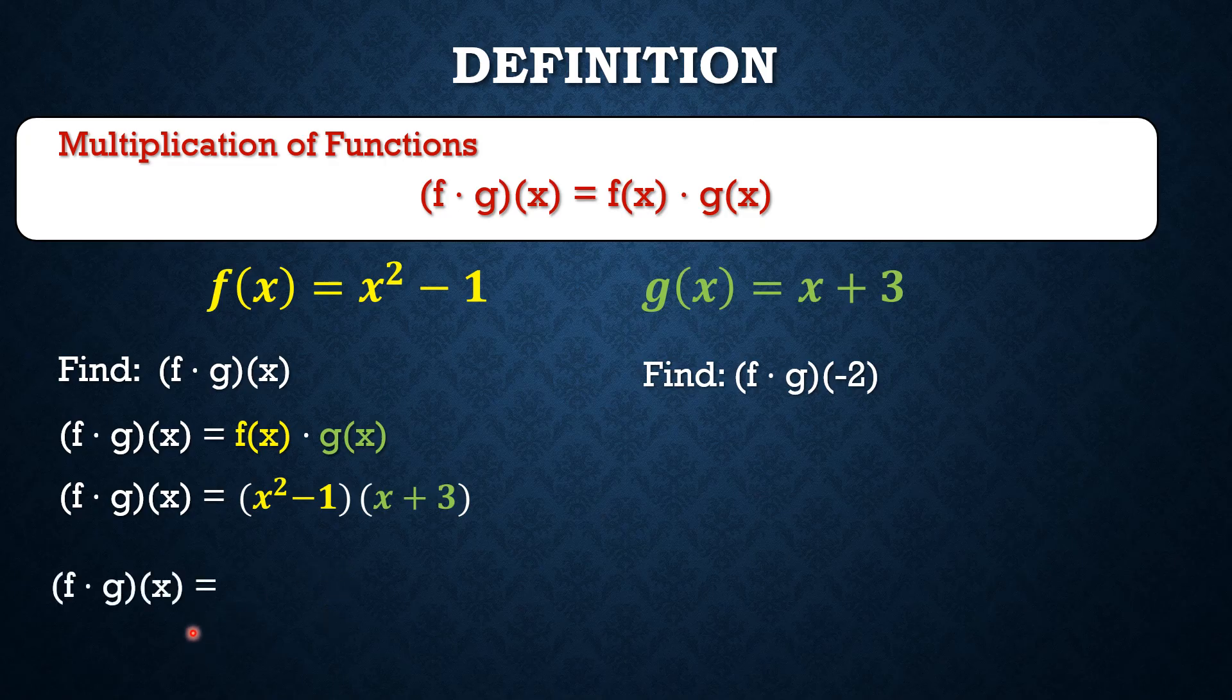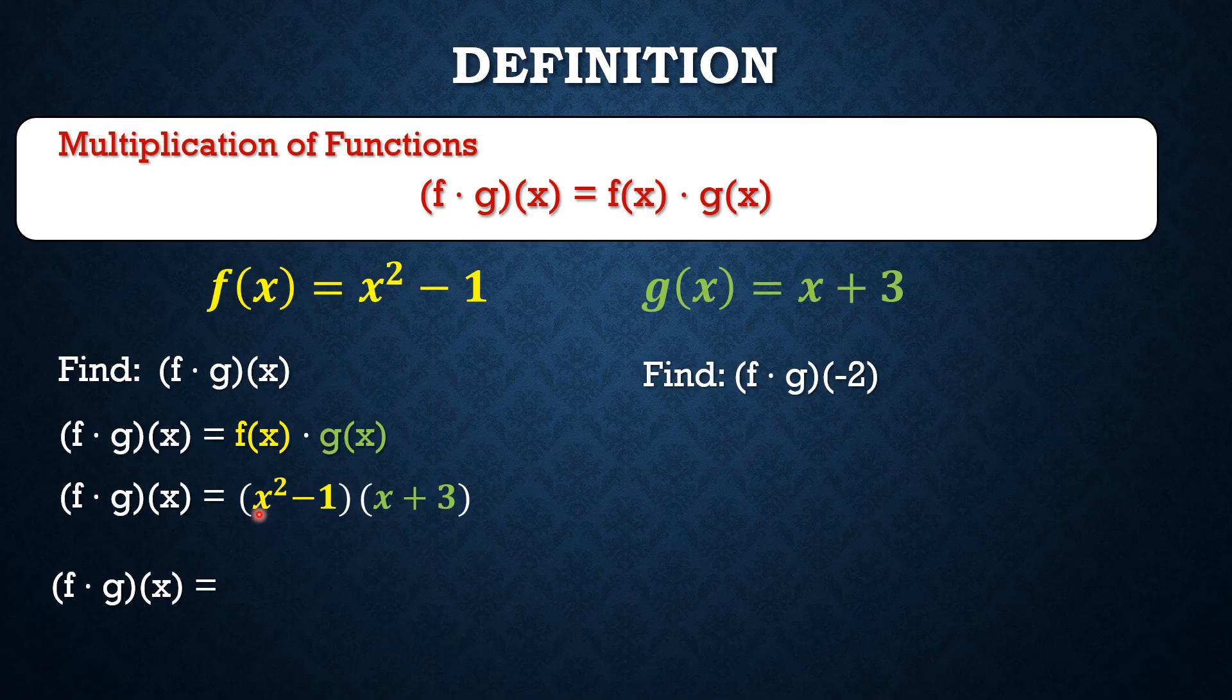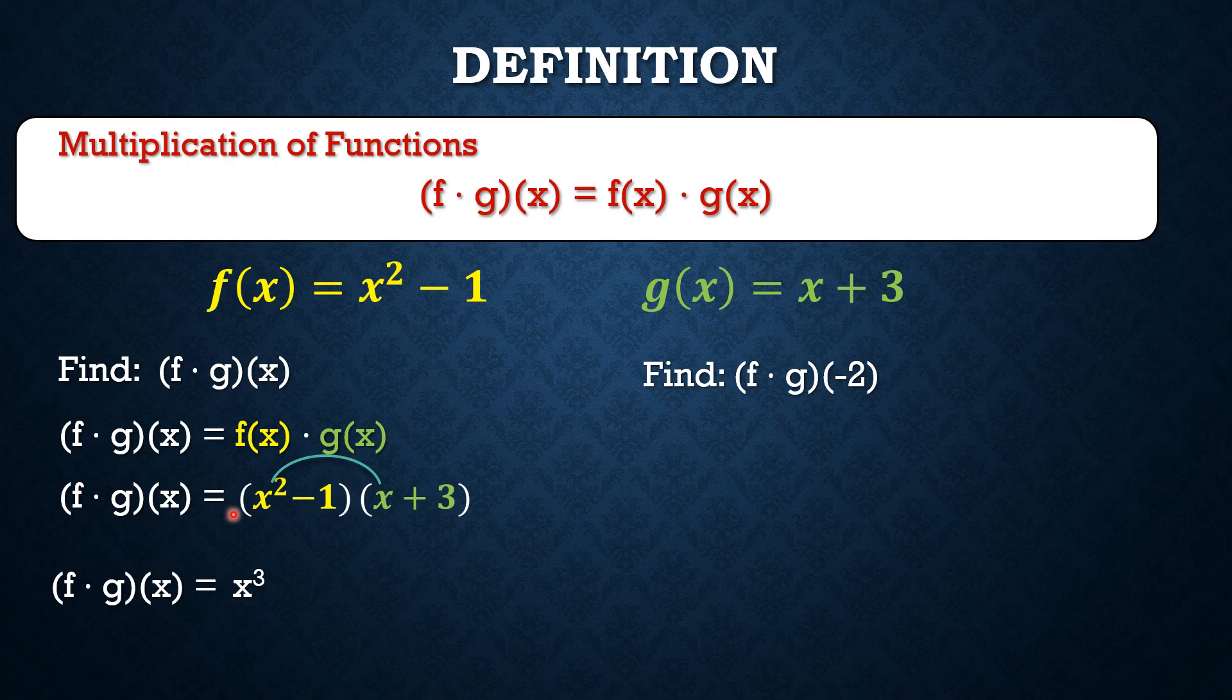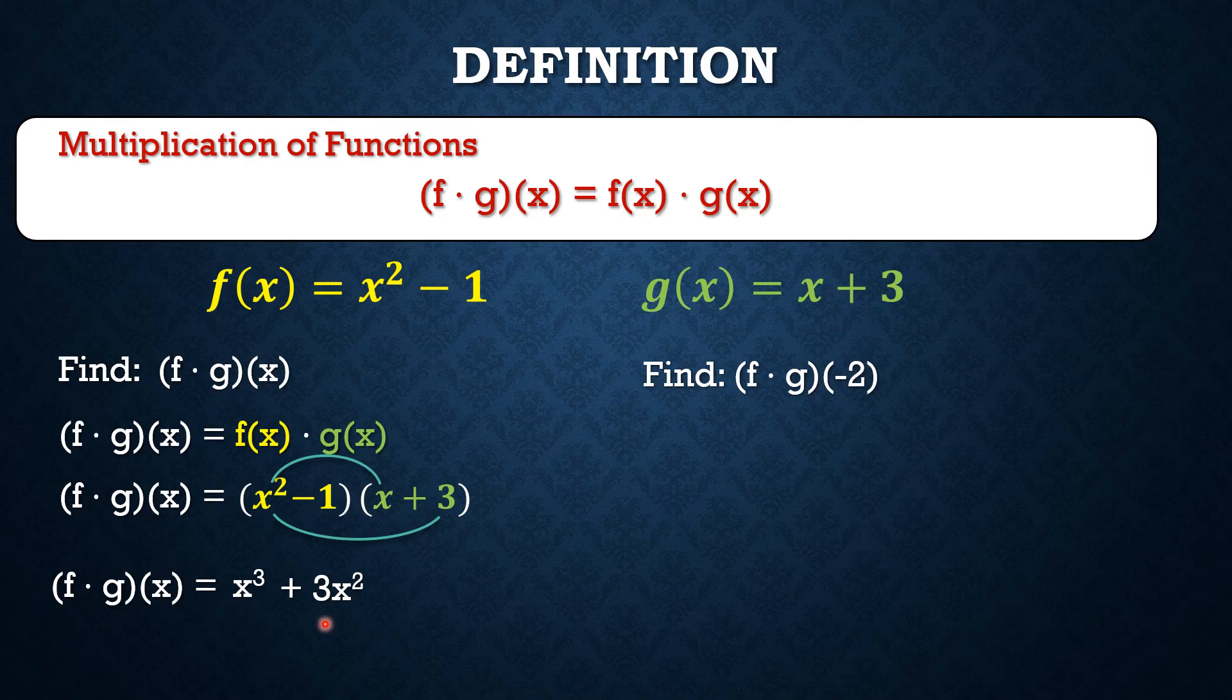And let's apply that to solve this. The first terms are x² and x. So x² times x is x³. Outer terms, we have x² and positive 3. So x² times positive 3, and that is positive 3x².